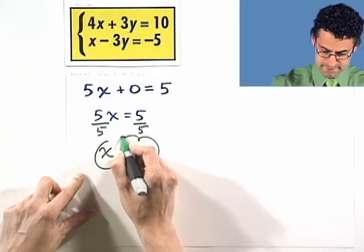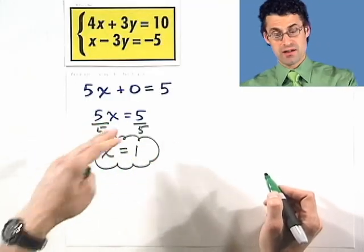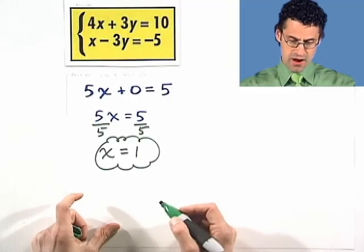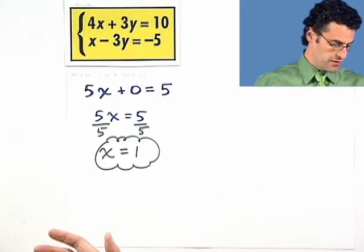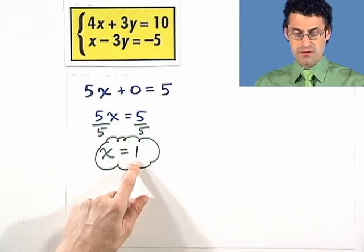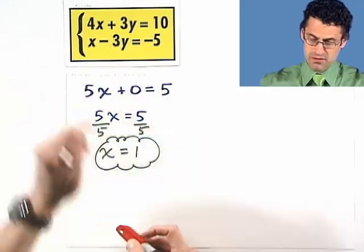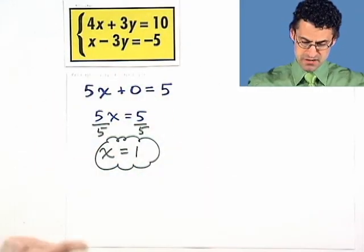Well, that's great. Now, am I done? No, because I have to find the y value that partners up with the x. How can I do that? Well, I can do that in either of the equations I want. All I've got to do is take one of these, plug in x equals 1, and solve for y. And you can use either one. I'm going to use this one because the numbers seem a little bit smaller, and I love small numbers.